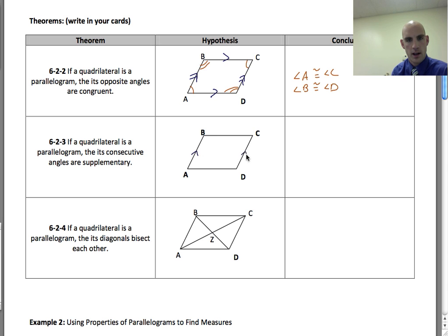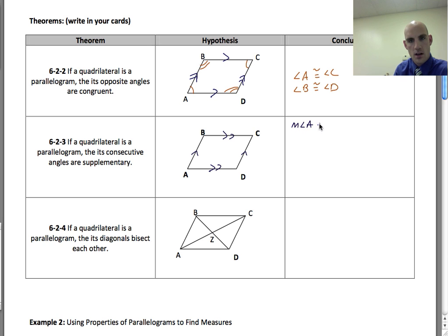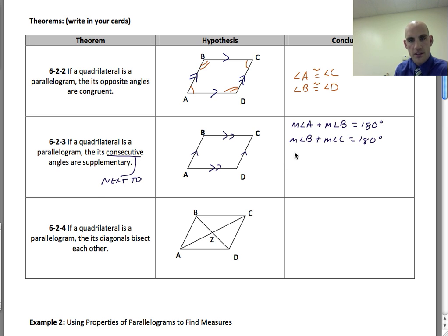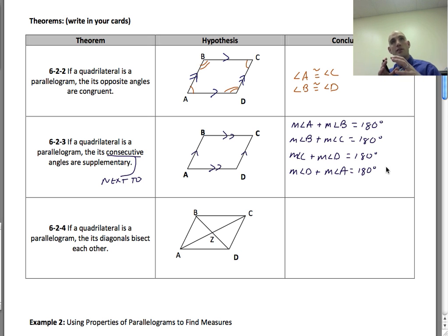The second theorem: if a quadrilateral is a parallelogram, then its consecutive angles are supplementary. So the measure of angle A plus the measure of angle B equals 180. Similarly, angle B plus angle C equals 180, angle C plus angle D equals 180, and angle D plus angle A equals 180. These are same-side interior angles between two parallel lines.